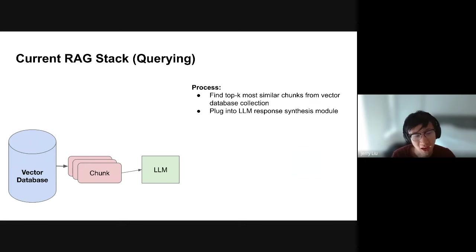We initialize our sub-question query engine and run example queries. One example: compare and contrast the risk factors of Uber and Lyft — the same question as before. You can see it breaks it down into two different sub-questions: what are the risk factors for Uber, and what are the risk factors for Lyft? It asks each over the respective document. You now get two different answers — one for Lyft, one for Uber — and then a final coherent answer: the risk factors for both Uber and Lyft include potential criminal, violent, inappropriate, or dangerous activity by platform users.